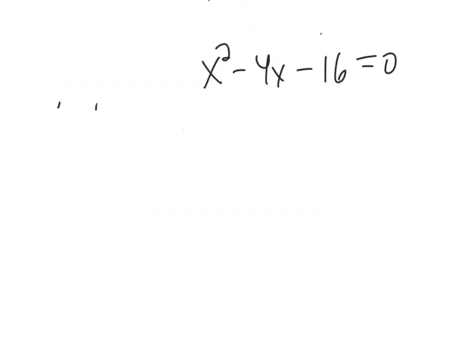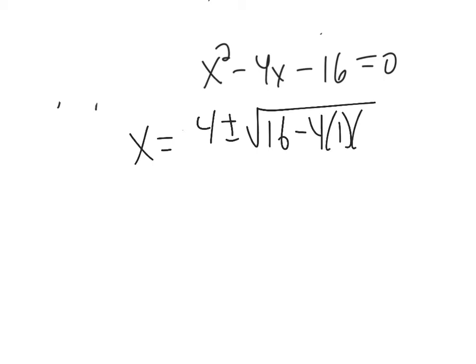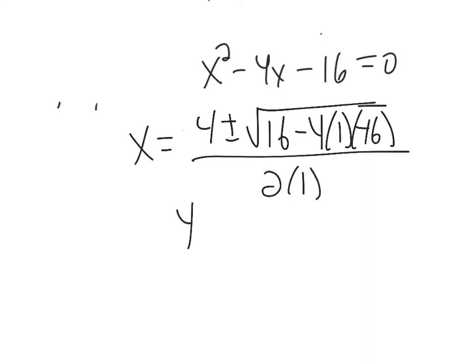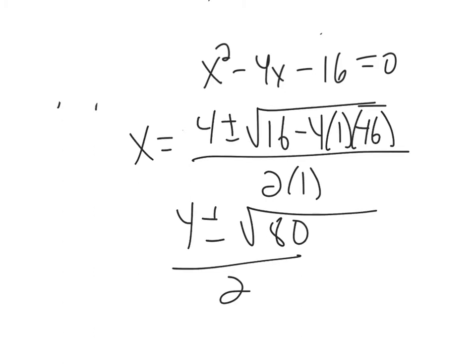Using the quadratic formula: x equals negative b plus or minus the square root of b² − 4ac, all over 2a. That gives us 4 plus or minus the square root of 16 + 64, which is 80, all over 2.